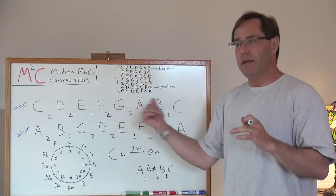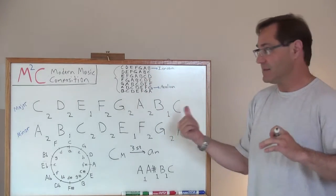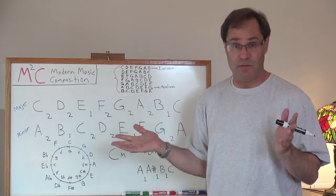Like I mentioned in the first video, there's 208 different set classes. The diatonic scale happens to be one of them.